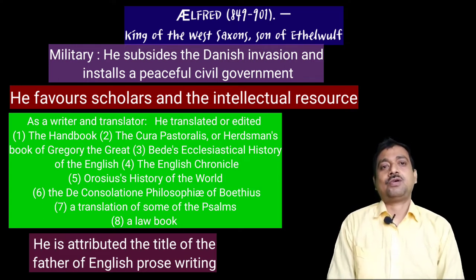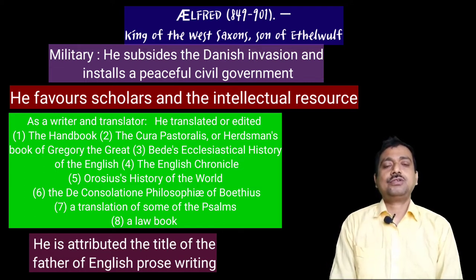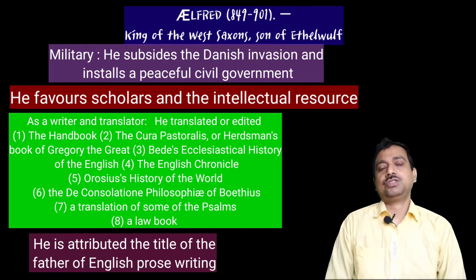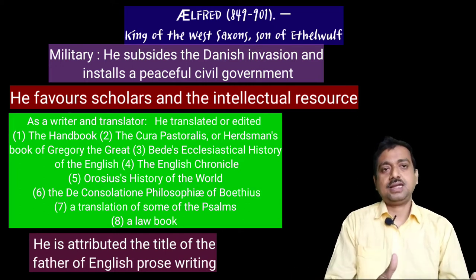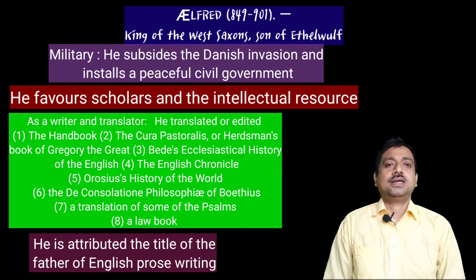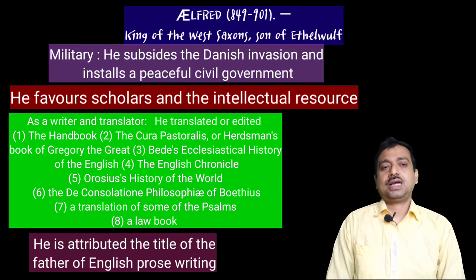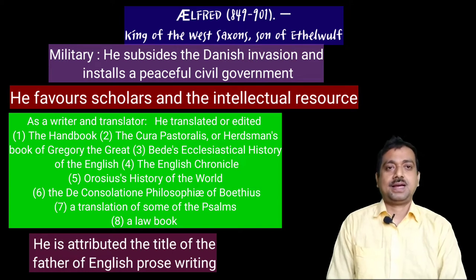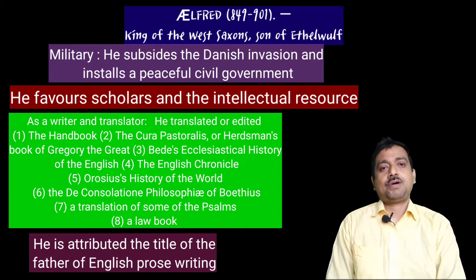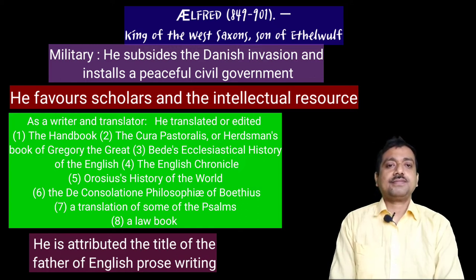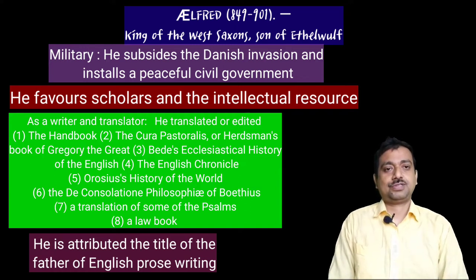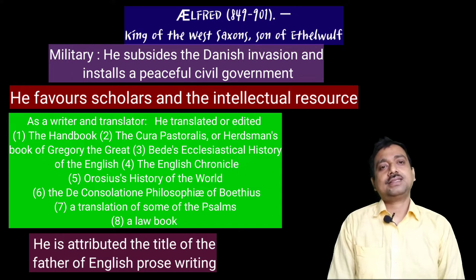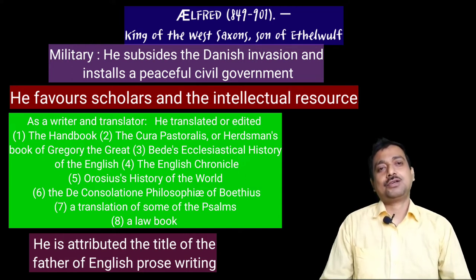Boethius's philosophy was also translated by him, and some psalms were translated by his own hand. He also compiled a law book, which exhibits the social panorama of the people of that time. For his literary contribution, particularly in prose, he is given the title 'Father of English Prose.' So we can take Alfred both as a king and as a literary contributor.